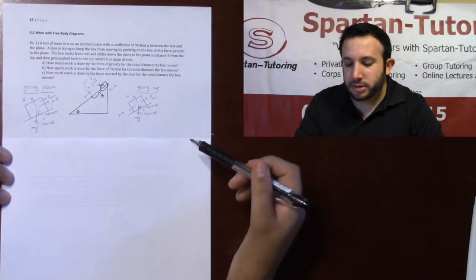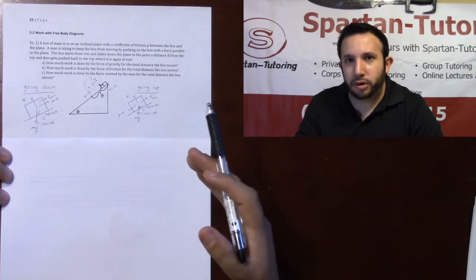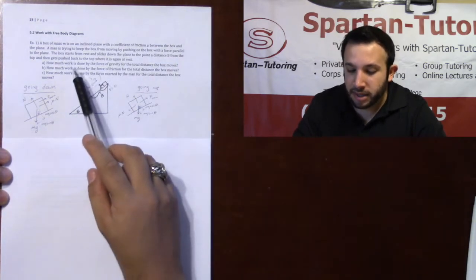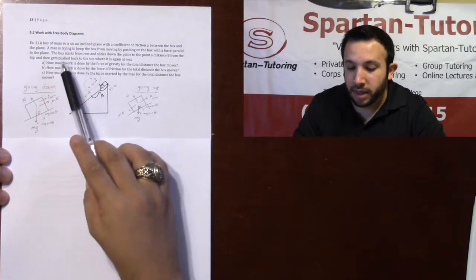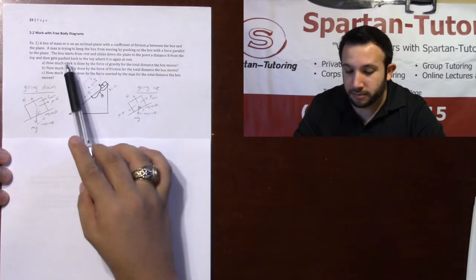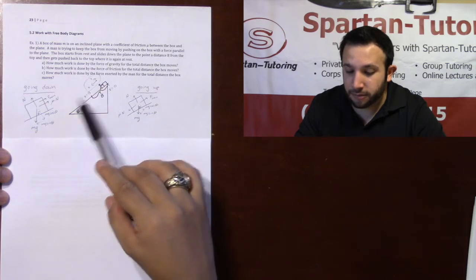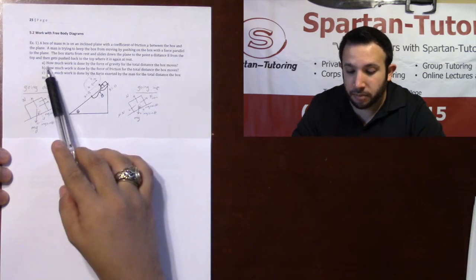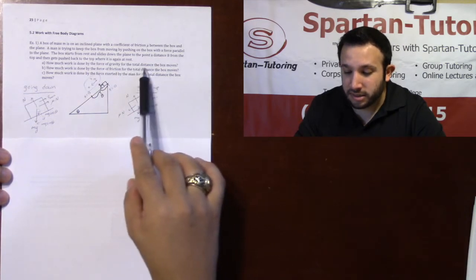Howdy. In this first example, this is a really good problem to introduce what I mean by calculating your work and integrating your forces in the direction of motion. A box of mass M is on an inclined plane with a coefficient of friction mu between the box and the plane. A man is trying to keep the box from moving by pushing up on the box with a force parallel to the plane. The box starts from rest and slides down the plane at a point a distance B from the top, and then gets pushed back to the top where it again is at rest.